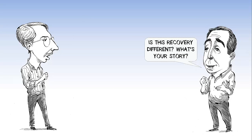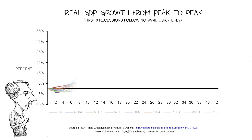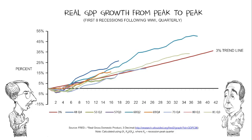It is different, but the last three recessions have been different. The last three recoveries have been different, and that's a very, very important fact. This shows you the first eight recessions since World War II. What you're looking at is a diagram that illustrates economic growth beginning with the cycle peak and ending at the end of an expansion.